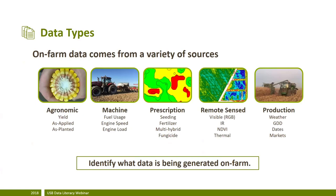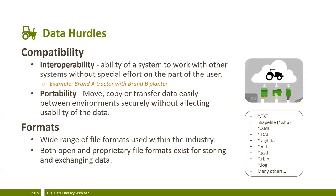When we think about data types, there's a variety of data generated on the farm at the field level. We can organize it into: agronomic data, machine data, prescriptions, remote sensing data, and production data — all important data streams that could bring information back to the grower. We should identify what data is being generated on the farm and what technologies are creating that data today. We continue to have hurdles in the industry, with compatibility being one of the primary ones — specifically interoperability and portability. Interoperability means connecting brand A tractor to brand B planner, while portability is about how you can move, copy, or transfer data between environments or platforms without affecting its usability.